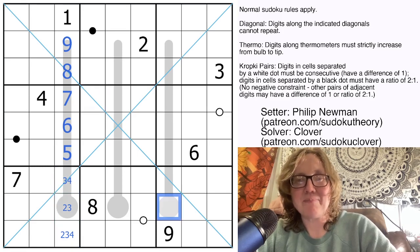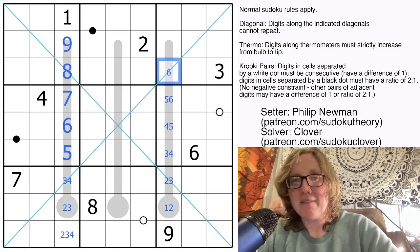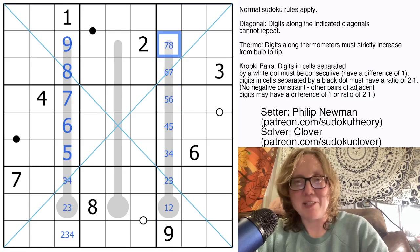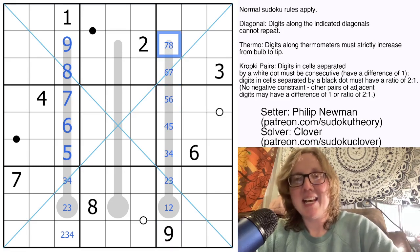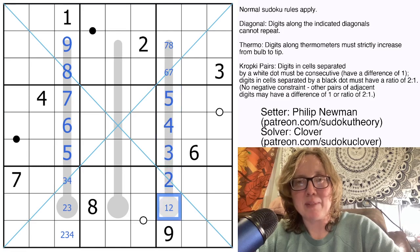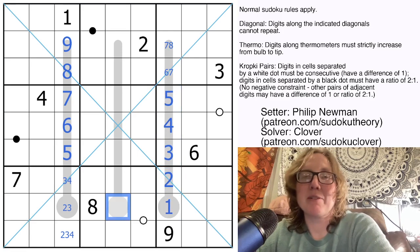Something very similar is going on here. This is either 1 or 2, 2 or 3, 3 or 4, 4 or 5, 5 or 6, 6 or 7, and 7 or 8 because we can't use 9. So the biggest digit we can use is an 8. This can't be 6 thanks to the 6 in the box. So that is 5, 4, 3, 2, and 1.